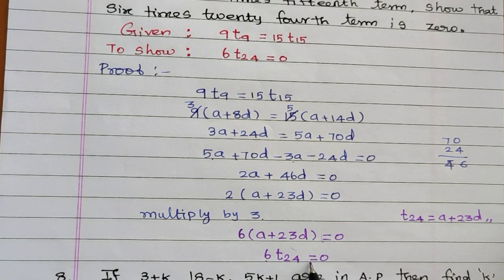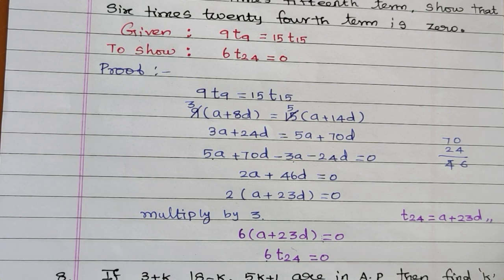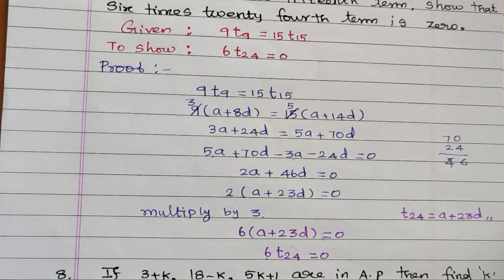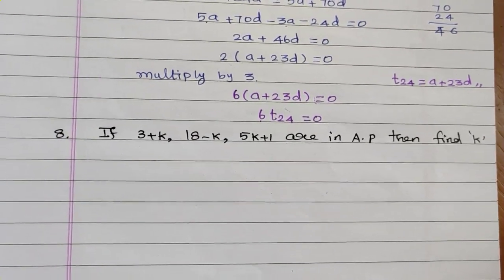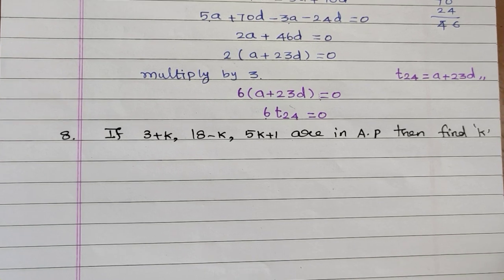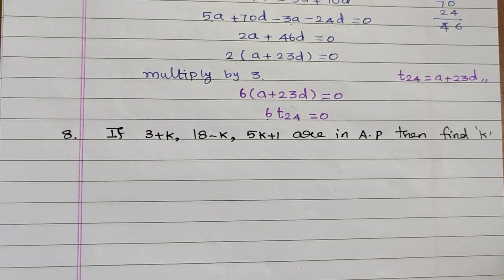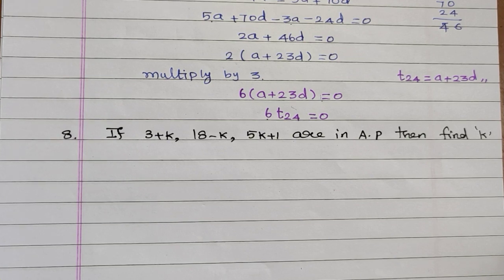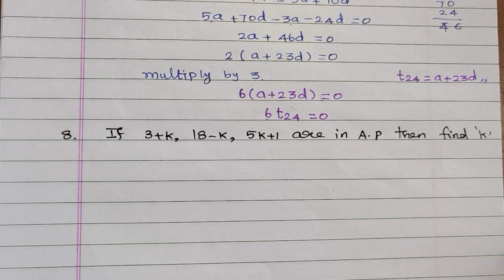The next question: if (3 + k), (18 − k), (5k + 1) are in AP, find k.